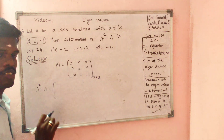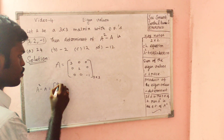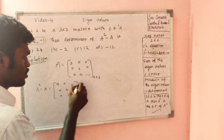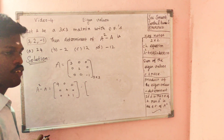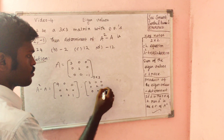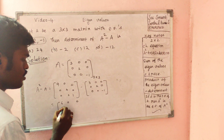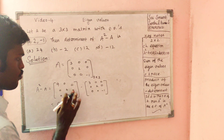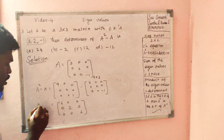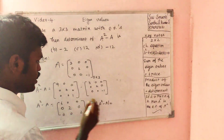A squared minus A — diagonal matrix multiplication is easy. A squared: just square the leading diagonal elements: 9, 4, 1. So 9, 4, 1 minus the A matrix: 3, 0, 0 / 0, 2, 0 / 0, 0, 1. When you subtract, we get the answer: 6, 0, 0 / 0, 2, 0 / 0, 0, 0. This is the A squared minus A matrix.